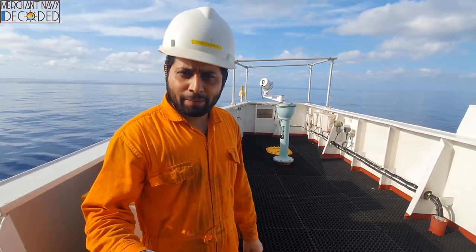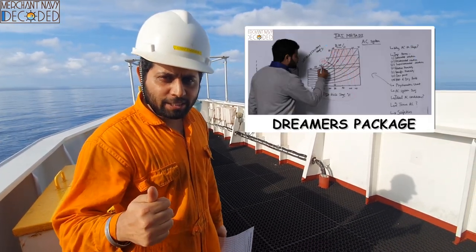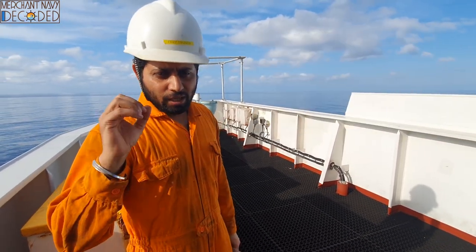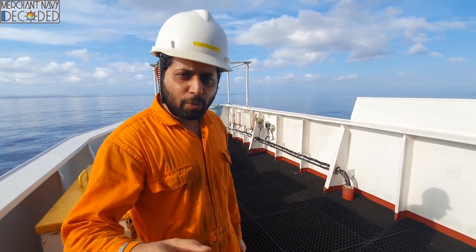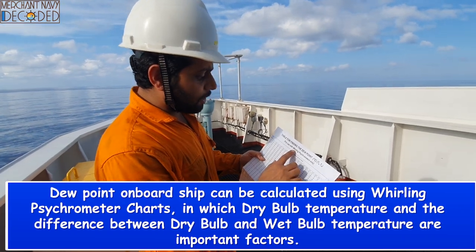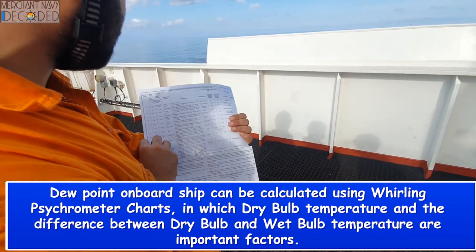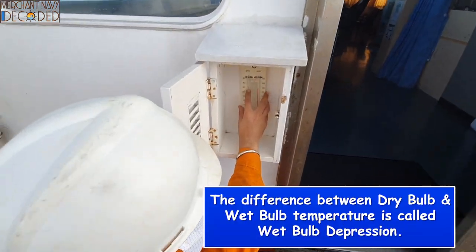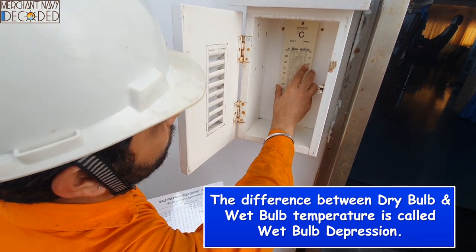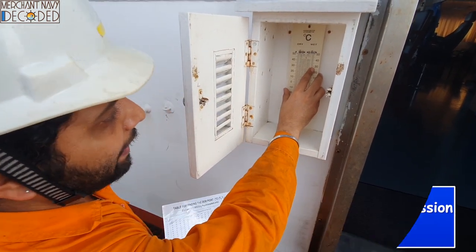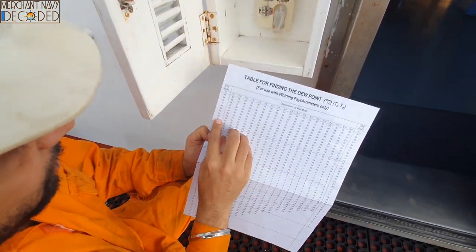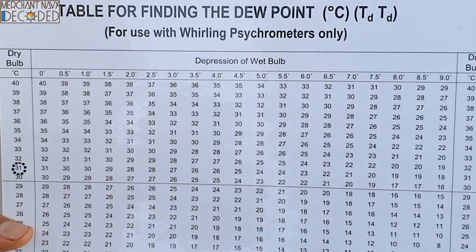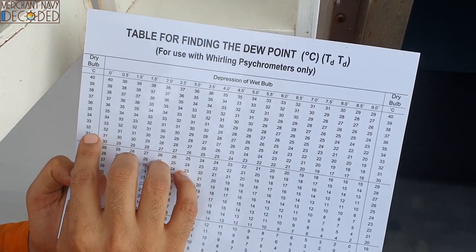So now let us learn how to measure dew point without using a psychometric chart. There is another way of calculating dew point on board, and that is by using this chart over here, which is called a whirling psychometric chart — the Stevenson chart. The dry bulb temperature is 31 and wet bulb is 29, so the difference between the two is 2 degrees centigrade. That is the depression in the wet bulb. So dry bulb is 31 degrees, depression is 2 degrees — therefore 28 degrees centigrade is the dew point. This is how we calculate dew point.